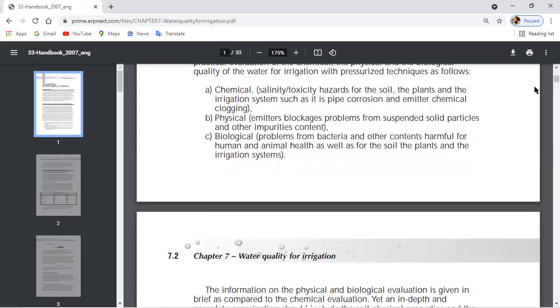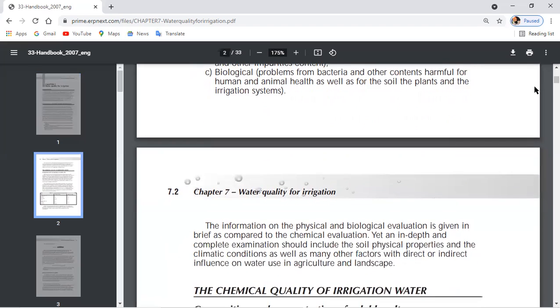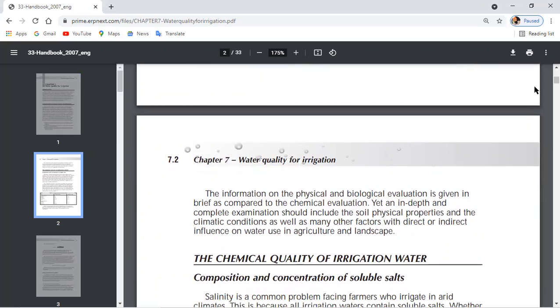The next is biological. Biological problems from bacteria and other contents are harmful for human and animal health. Bacterial contents such as algae and other contents - algal content in the soil is bad. Bacteria and algal growth affect the emitters also. Because if there are bacteria present and algae present, then clogging will happen in the emitters.